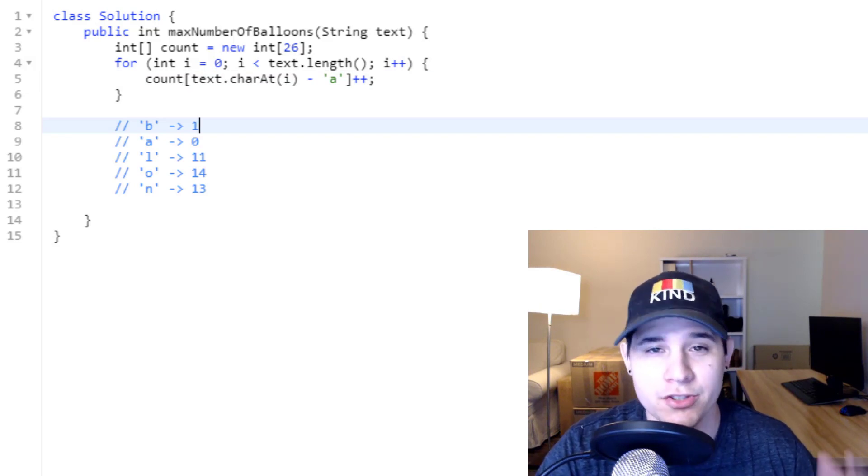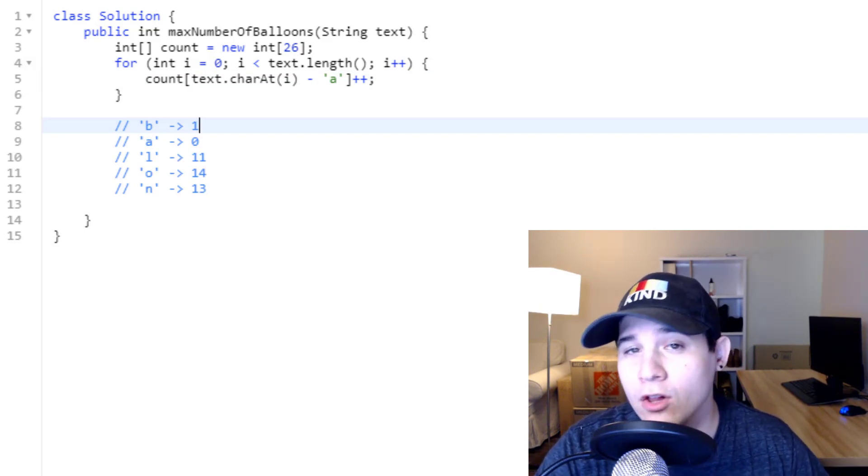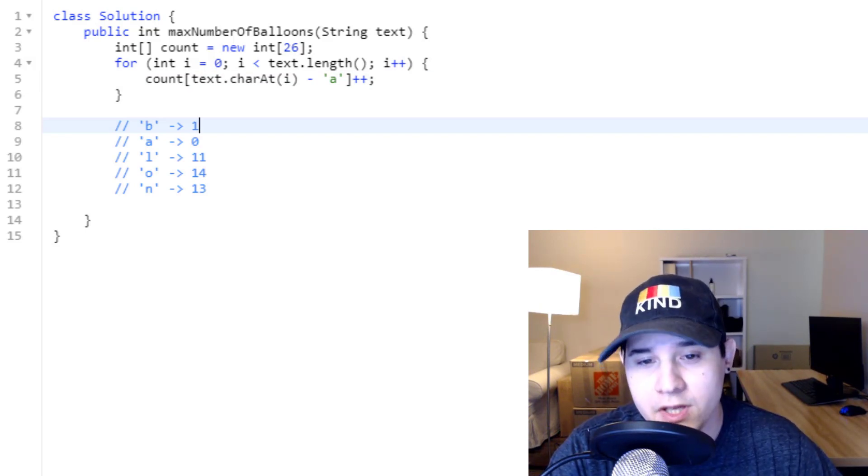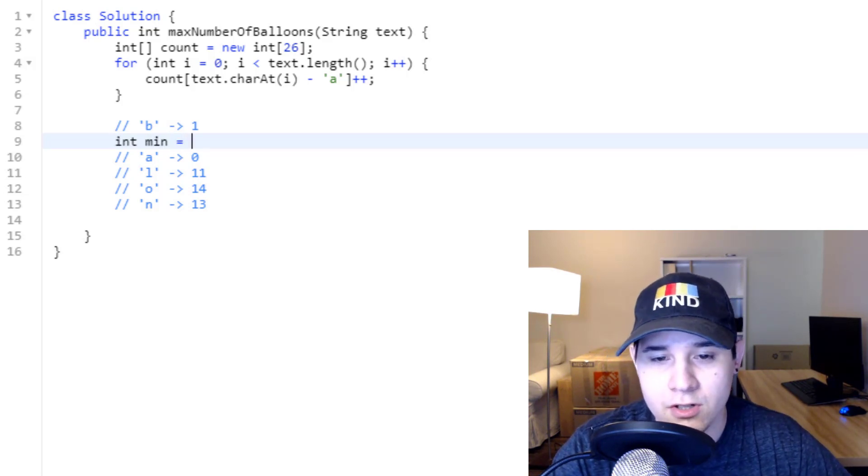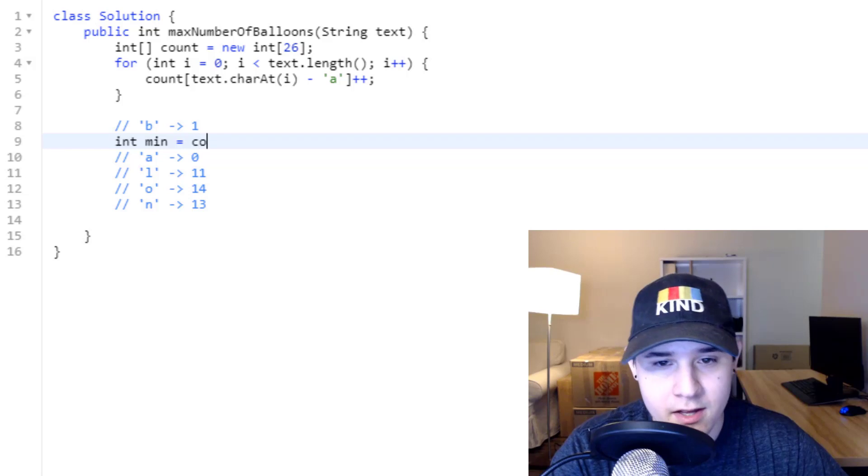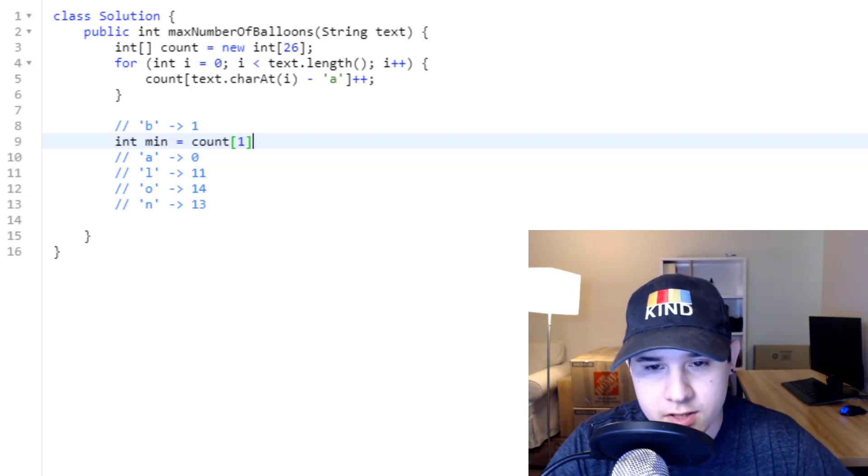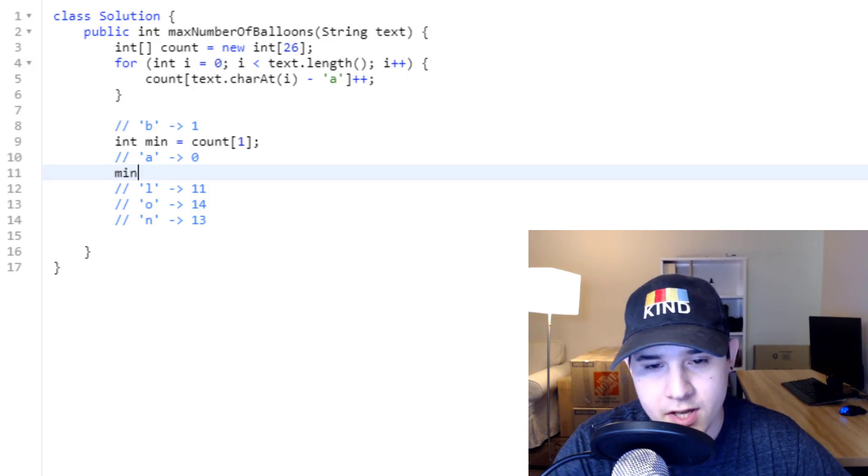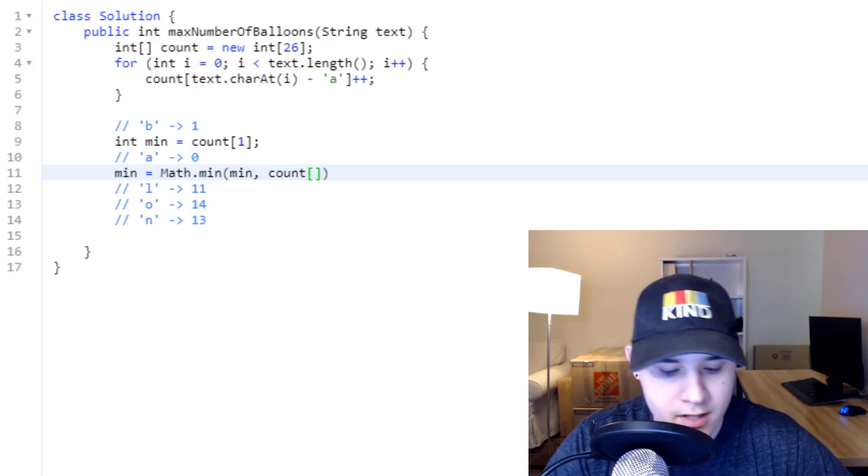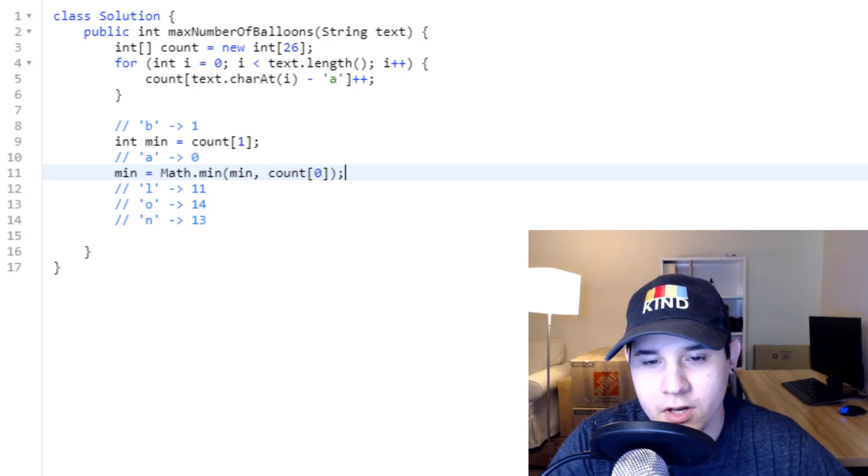And now we just need to look at the characters that we care about, b, a, l, o, and n. So starting with b, that is mapped to index one. So let's create an integer, min, and we can say that is mapped to count at index one. We come down to character a, we say min is equal to math dot min between min and count at index zero, because that's where character a is.